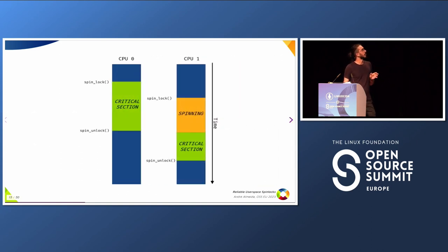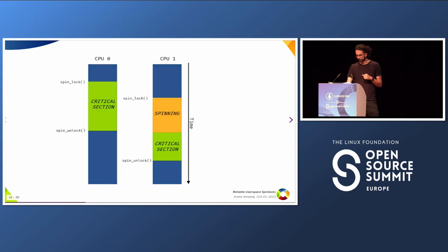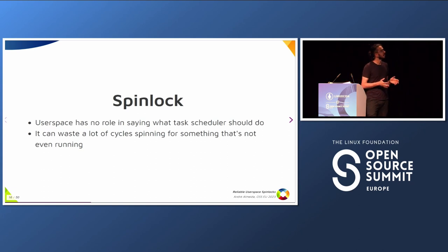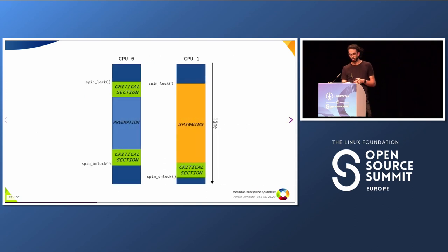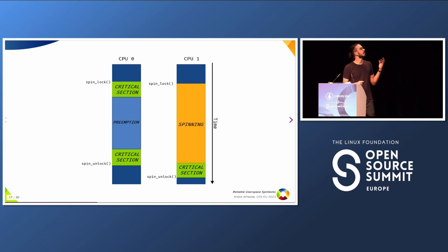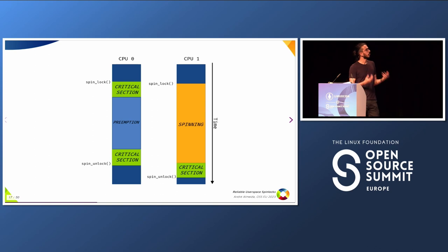The ideal scenario would be: as soon as the lock is free, CPU 1 will get it and let's go. But it's not that simple, because user space has no role in saying what the task scheduler should do. That means we can waste a lot of cycles spinning for something that is not even running. Let's say CPU 0 gets a lock and the task scheduler decides to preempt that thread in the middle of the critical section to do some other work. Meanwhile, CPU 1 is spinning, but this is just a waste of CPU cycles — you're spinning for something that is not going to be available.